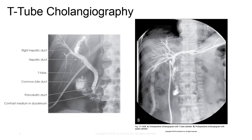T-tube cholangiograms are performed post-op and are sometimes called delayed cholangiograms. These involve a T-shaped tube left in the common hepatic duct and common bile ducts for post-operative drainage, which is injected with contrast media. They are performed to demonstrate patency of the ducts, status of the sphincter of the hepatopancreatic ampulla, and the presence of residual or previously undetected stones. The tube gets clamped the day before the procedure, which fills the tube with bile to prevent air bubbles from entering, as air bubbles can mimic radiolucent stones.